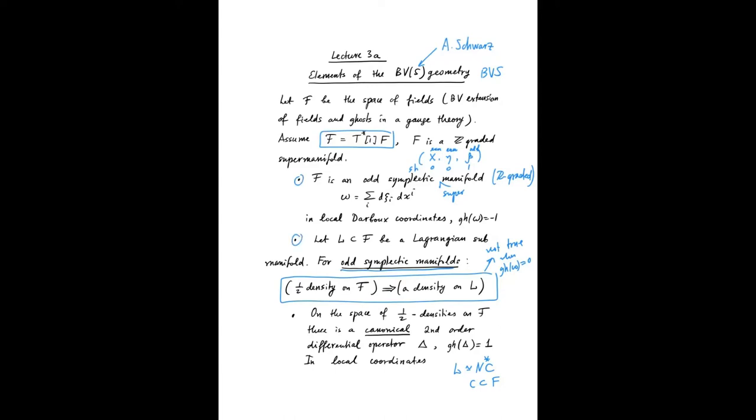This is a very important fact that half densities—we discussed half densities in the first lecture—half densities on F induce densities on Lagrangian submanifolds. Another important fact is that on the space of half densities on F, there is a canonical second order differential operator, an odd differential operator with ghost number one, which is called the BV Laplacian.